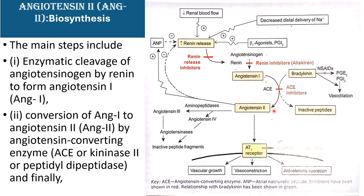We have to inhibit this step to reduce blood pressure. The third step is angiotensin 2 acting on the angiotensin 1 receptors. We can block this receptor to inhibit vasoconstriction, growth of vascular muscle, or aldosterone secretion, to inhibit the rise of blood pressure.